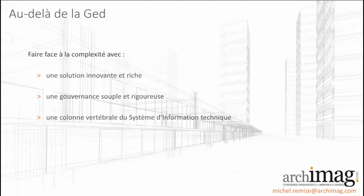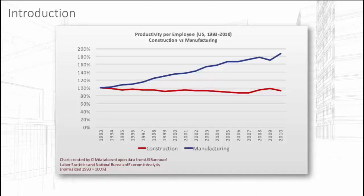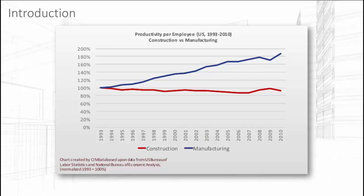Merci Michel. Bonjour à tous, merci à tous de nous suivre. En introduction, je vous propose de rester quelques instants sur un graphique établi par la société Simdata, qui représente la productivité par employé dans deux secteurs industriels : l'industrie manufacturière en bleu et l'industrie de la construction en rouge, sur une période de presque 20 ans. Dans le secteur manufacturier, la productivité par employé augmentait de plus de 90% sur cette période, alors qu'elle a diminué ou stagné dans la construction. Cette augmentation est notamment permise grâce à la standardisation des processus et la mise en place d'outils de type PLM.